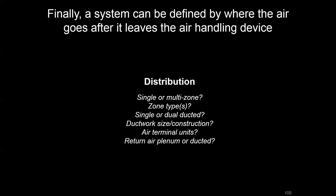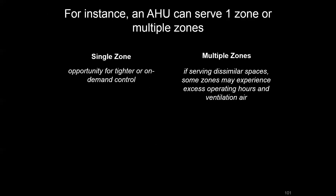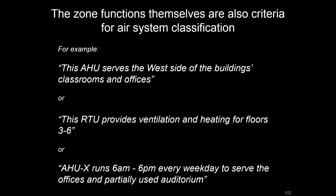Distribution: what happens when air leaves the air handler, how does it get to the zones, and how does it get back? We want to know whether this is serving a single zone or multiple zones, as that has implications on what type of sequence changes we can make. Single zones lend themselves more to demand control ventilation, but multiple zones — especially with dissimilar spaces that may have different schedules or varying flow or temperature set point needs — may have opportunities for optimization as well. Pay attention to the type of zones and what their needs are.